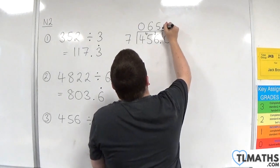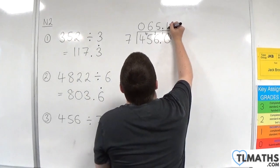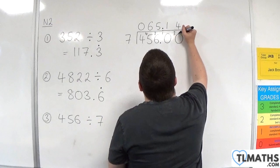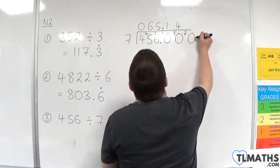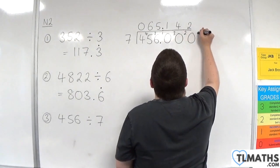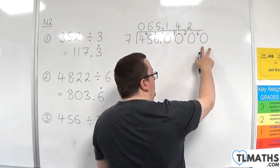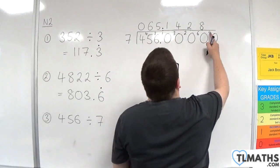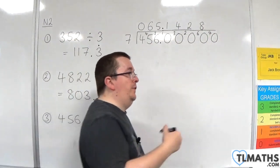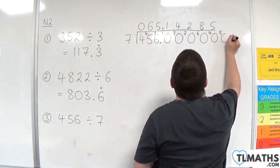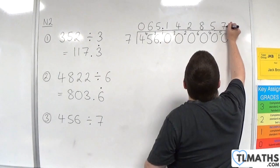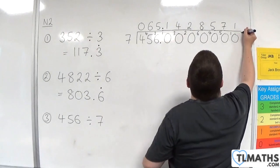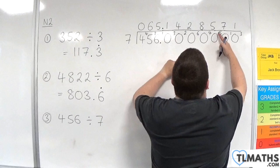I'm going to bring in a 0 and then decimal point. 7s into 10 go once with 3 left over. 7s into 30 go 4. 4 times 7 is 28 with 2 left over. 7s into 20 go twice with 6 left over. 7s into 60 go 8. 8 times 7 is 56 with 4 left over. 7s into 40 go 5. 5 times 7 is 35 with 5 left over. 7s into 50 go 7 with 1 left over. 7s into 10 go 1 with 3 left over. You can see this pattern is going to repeat itself.